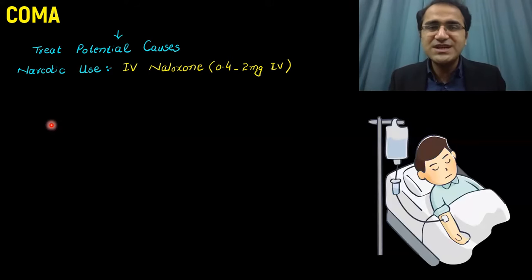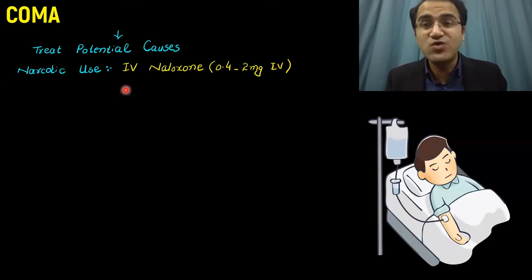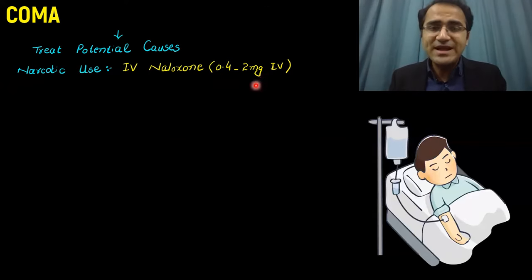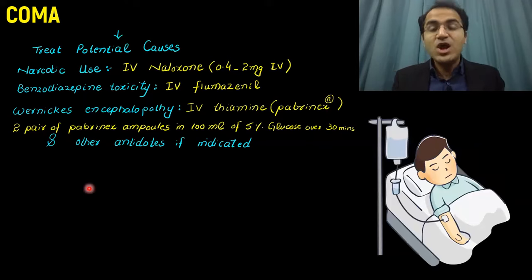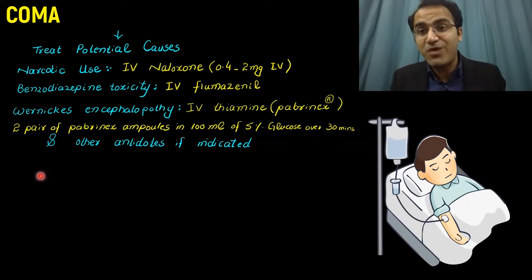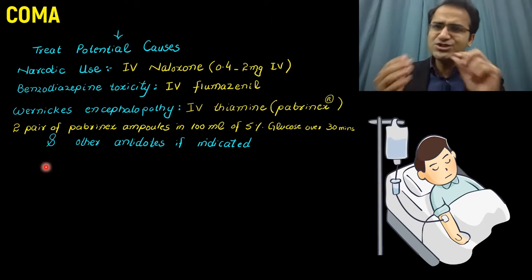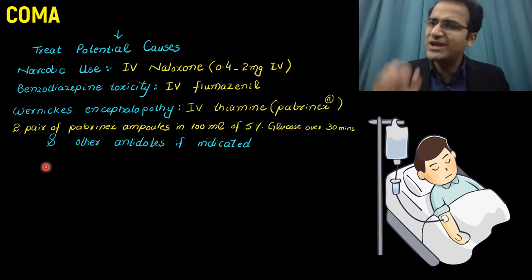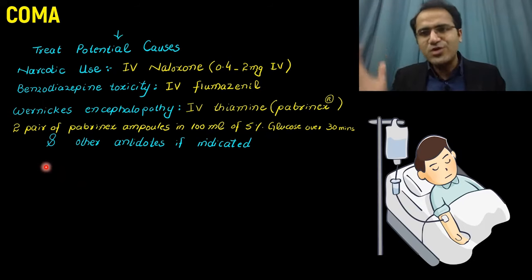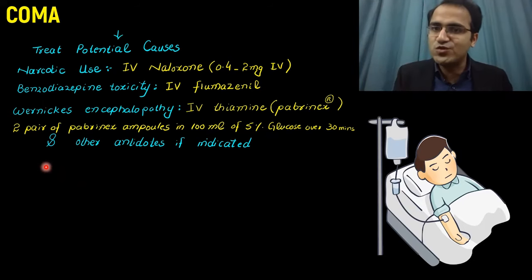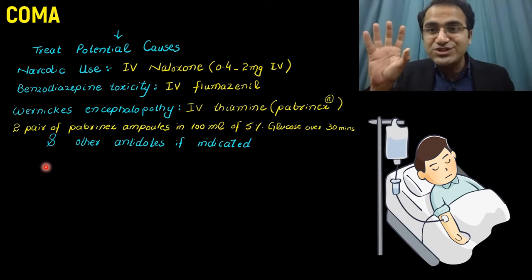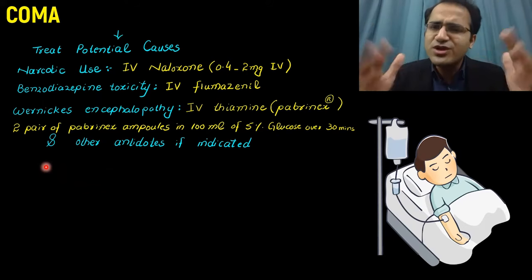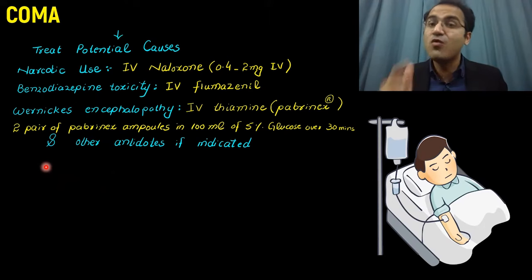You have to find out these causes. If the patient is having a narcotic or opiate overdose, give IV naloxone 0.4 to 2 mg IV. Give IV flumazenil if the patient is having benzodiazepine toxicity. Chronic alcoholics usually present to the emergency department in a deeply unconscious state. You check their blood glucose level and they are hypoglycemic — your basic instinct would be to give IV dextrose. But remember, giving IV dextrose only in these patients would lead to lactic acidosis, deepening their coma.